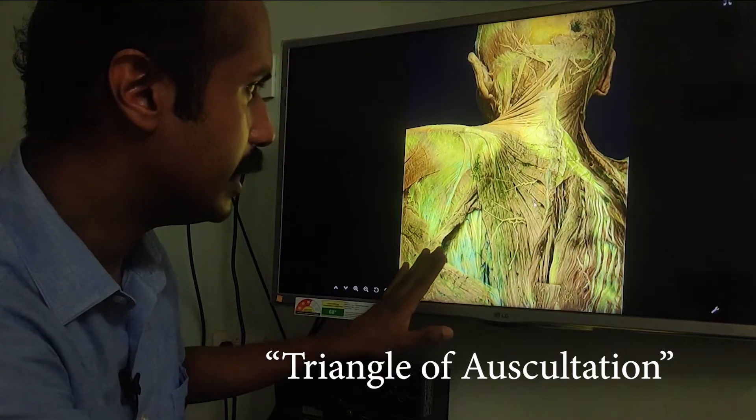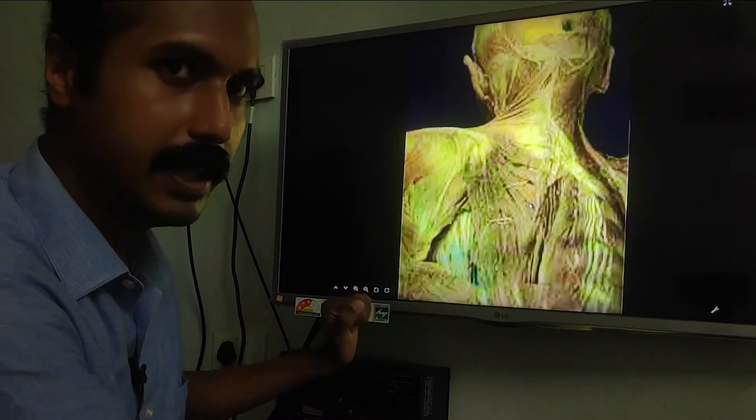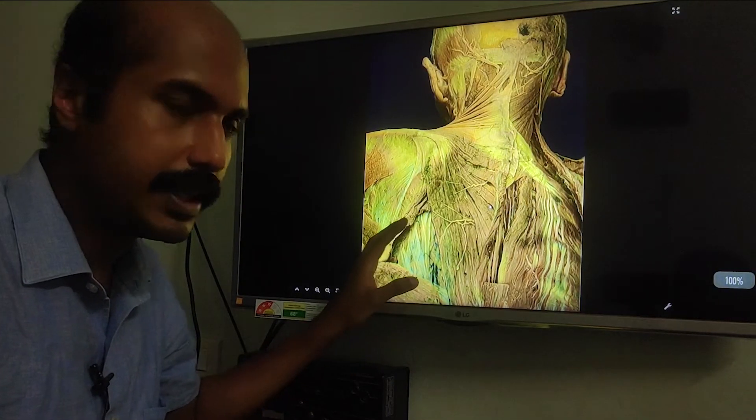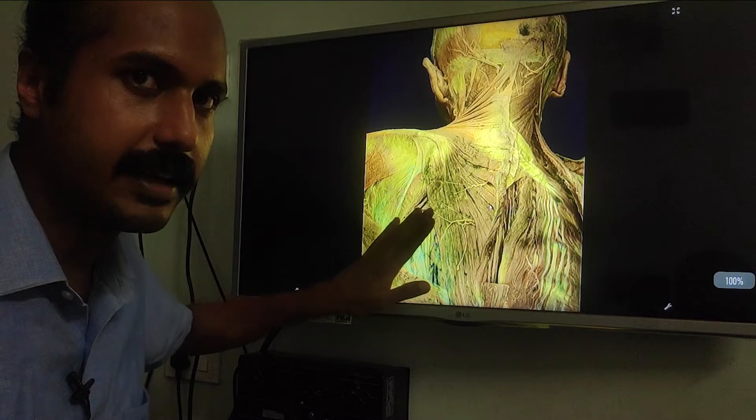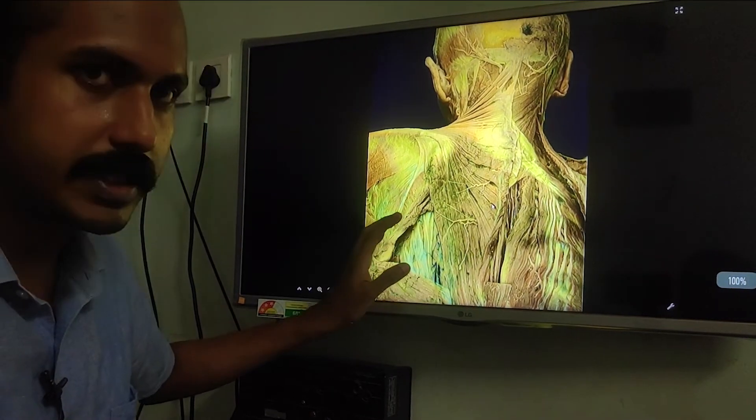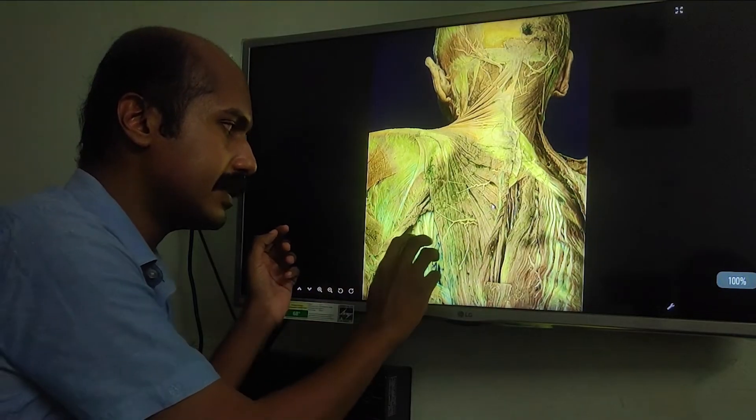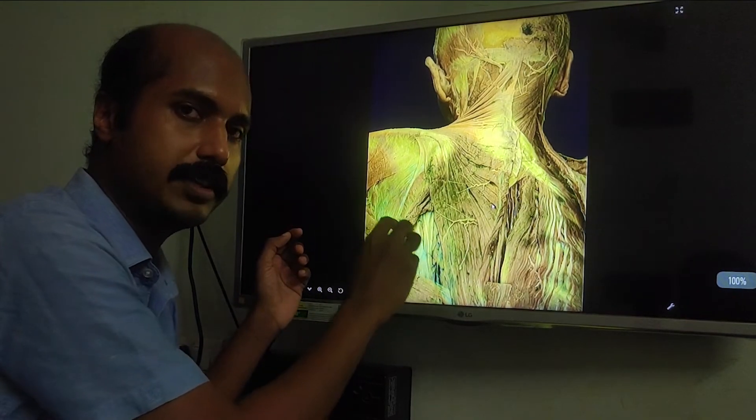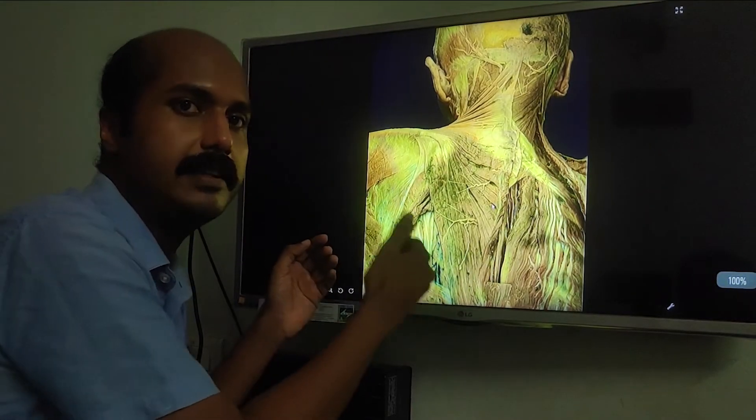The triangle of auscultation is located in the lower aspect of the thorax, a little bit laterally. It's basically a window within the posterolateral aspect of the thorax, and the importance of this triangle is that if you place a stethoscope over it, you have minimal impedance between the stethoscope and the lung sounds.